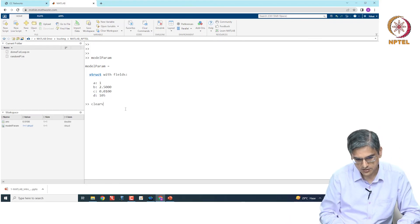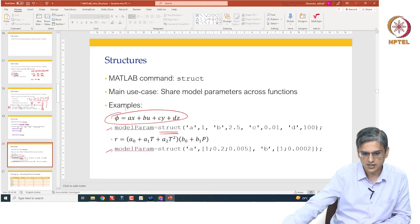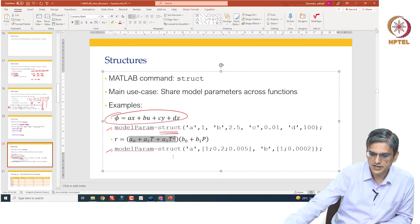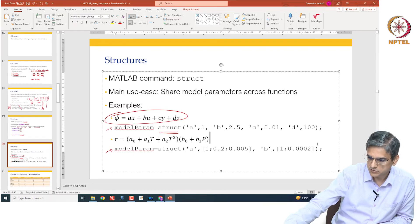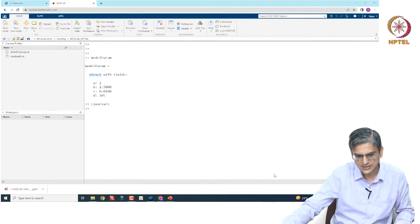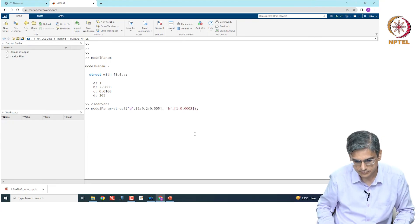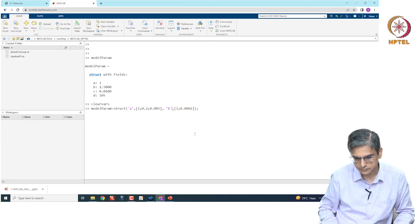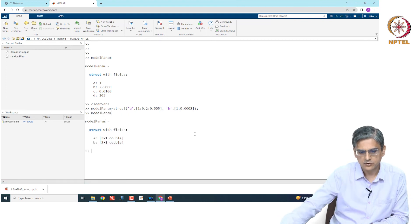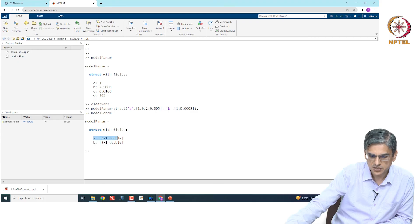If I type model param, you will see that a, b and c have remained the same, but d now has changed to 105. Let me clearvars to remove all the variables. And let us look at another case. Another case is where r is a function of both temperature and pressure. And it is polynomial in temperature and linear in pressure. And we have these parameters. In this parameters, your parameters are vectors.